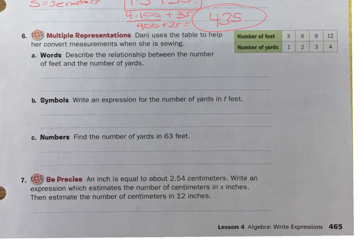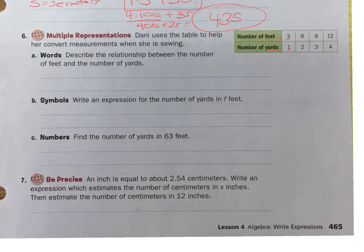This next one is really tricky, but we'll get it. Danny uses a table to help convert measurements when sewing: for every 3 feet, we have 1 yard. Going from feet to yards — to get from 3 to 1 we divide by 3; from 6 to 2, divide by 3; 9 to 3, divide by 3; 12 to 4, divide by 3. So if you know feet, divide by 3 to get yards. Or if you know yards, multiply by 3 to get feet.